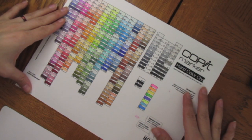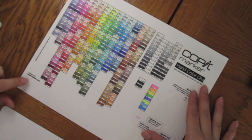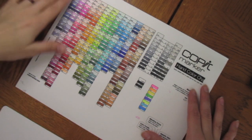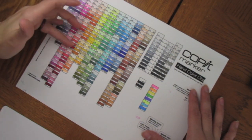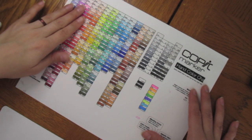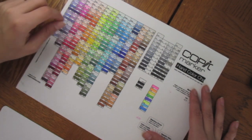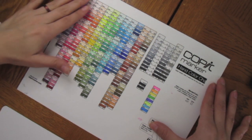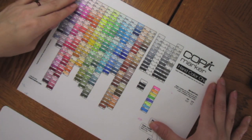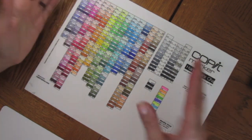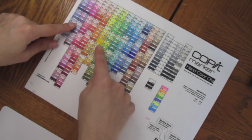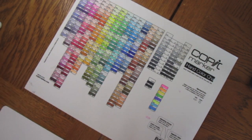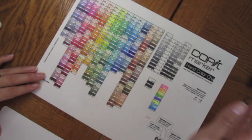This is a color chart that I downloaded from copicmarker.com forever ago when I first got my Copic Markers, and then I started filling out the colors that I had. So as you saw in my previous video, I don't have to be testing all the colors when I get a reference image, because I can put my cell phone right here and then see with clarity which color I might need.